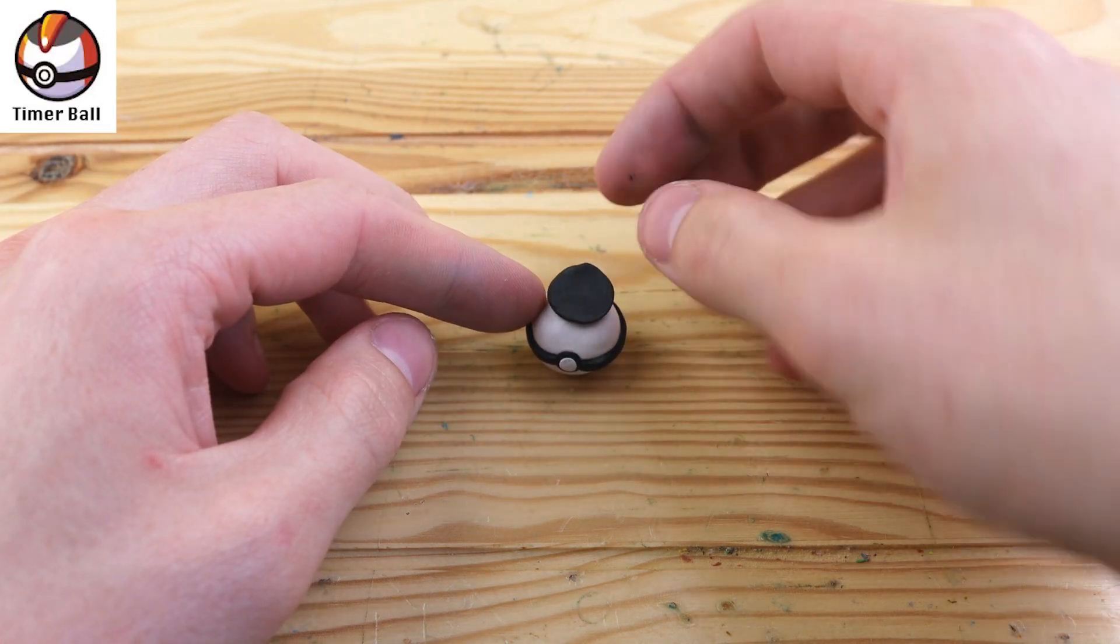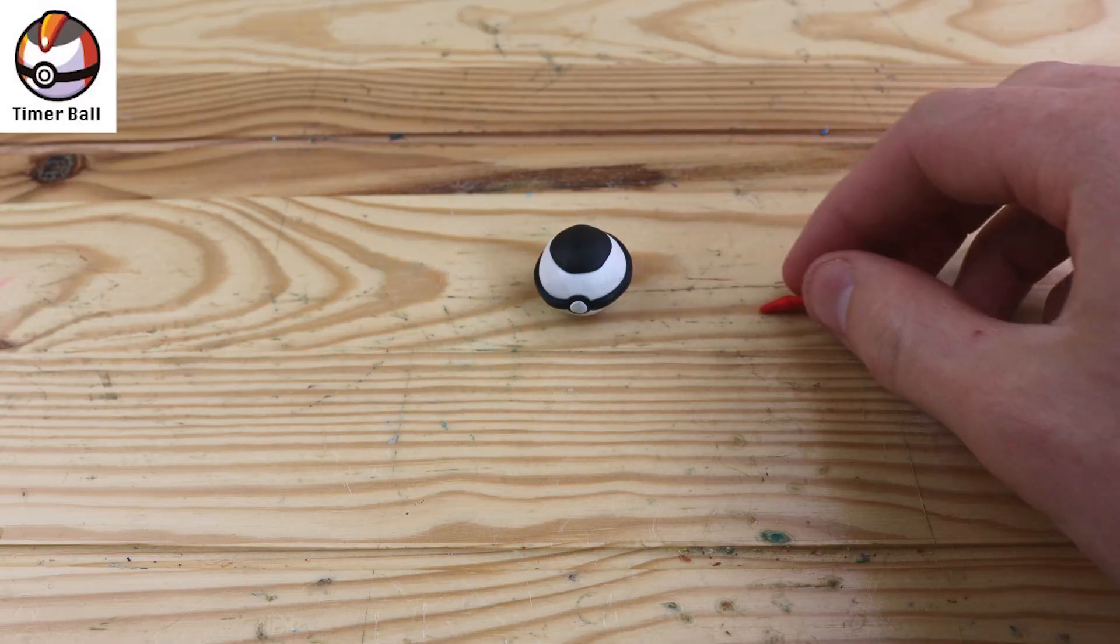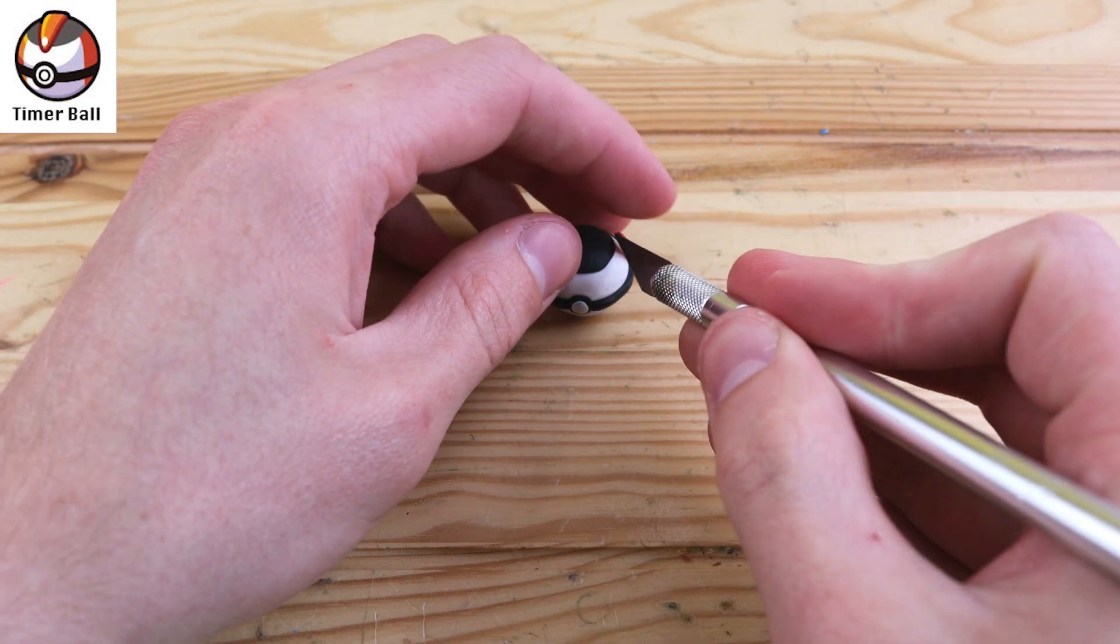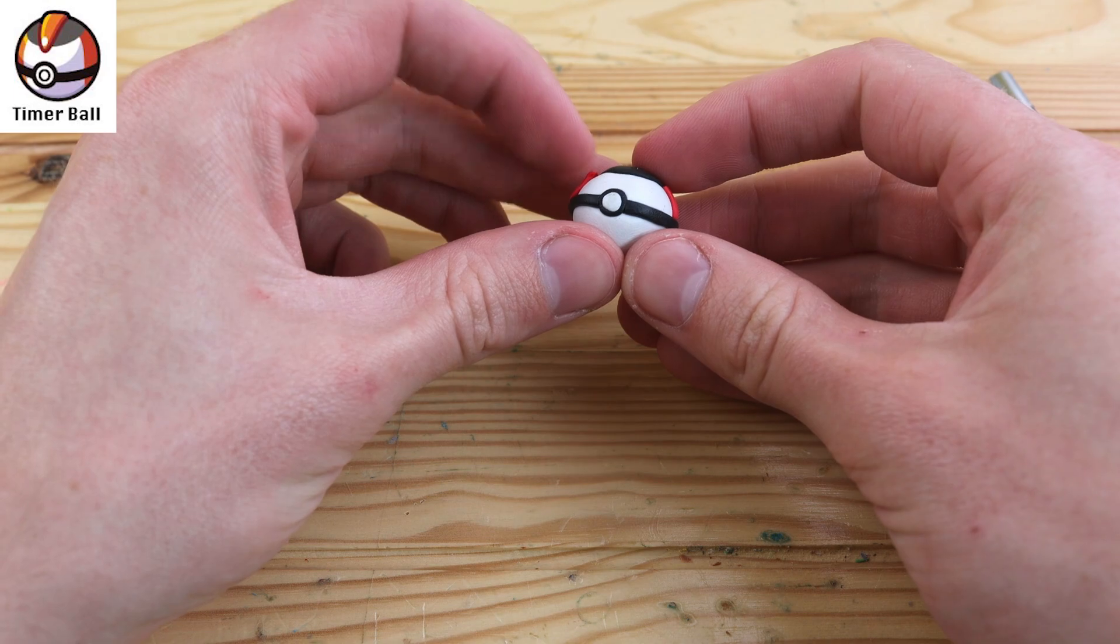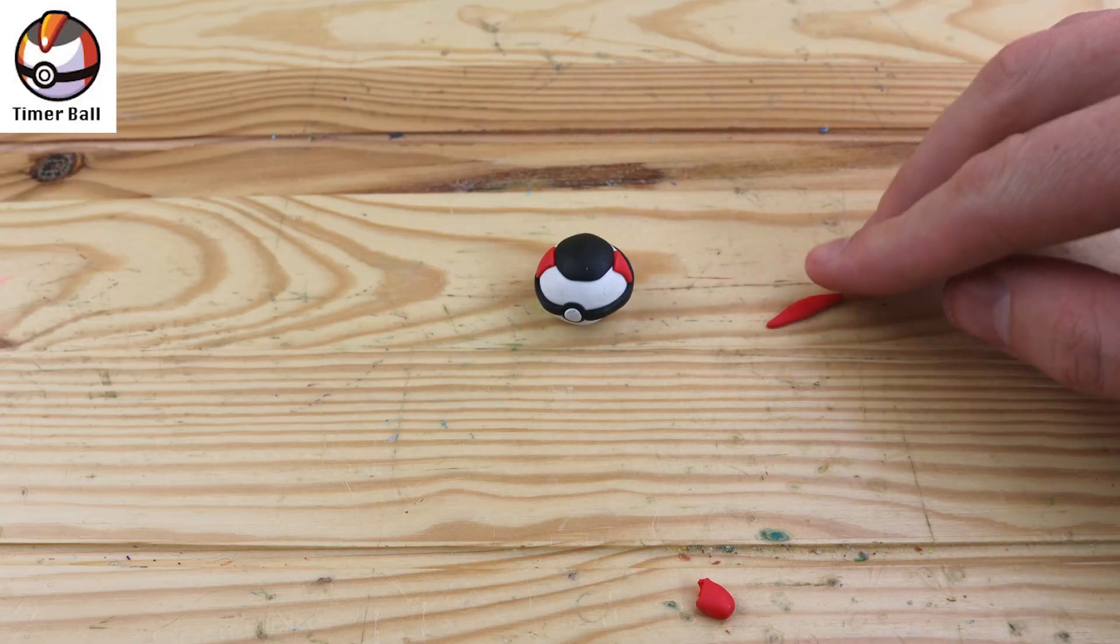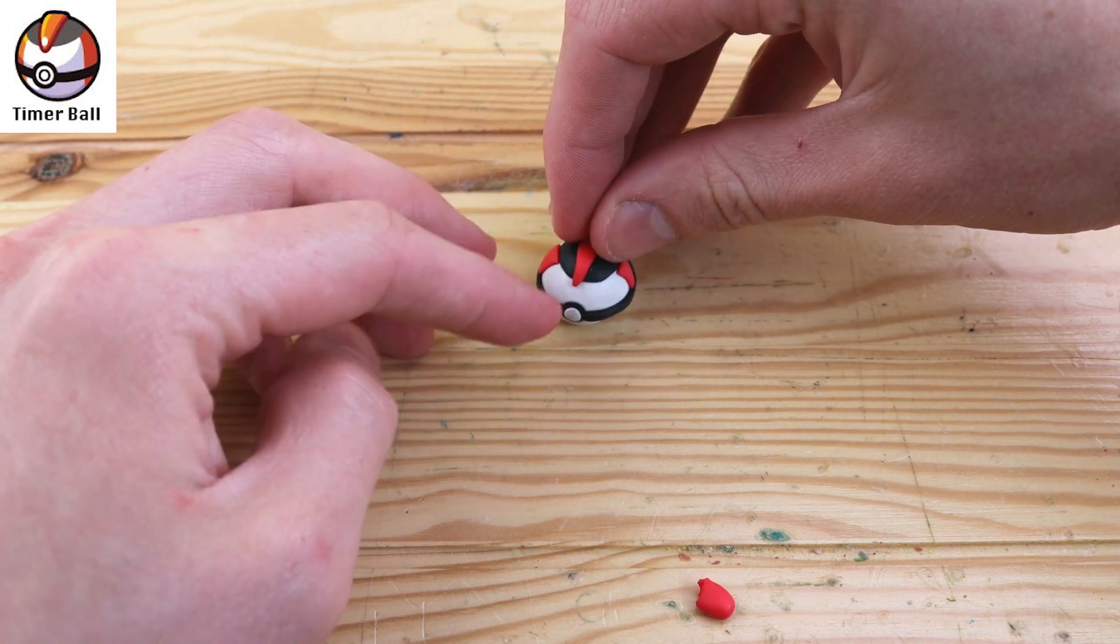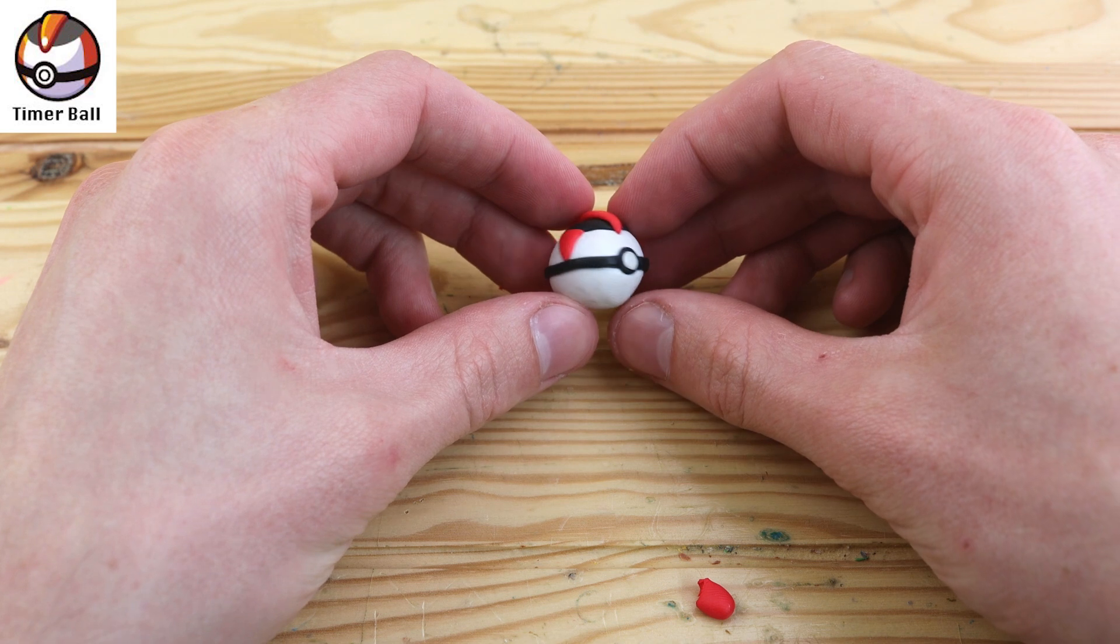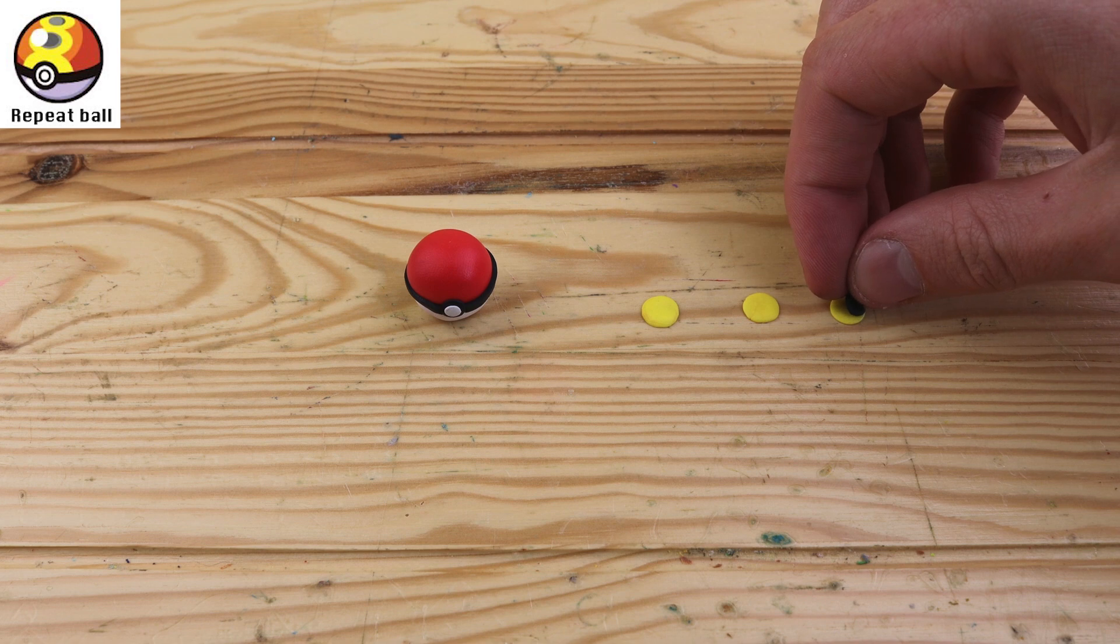And let's move on to our next Pokéball. The Timer Ball is basically the exact opposite of the Quick Ball. This one is more likely to succeed the longer you've been in the battle. We have some little red triangles on the side, and on the top we have this little strip that really reminds me of a Mohawk.